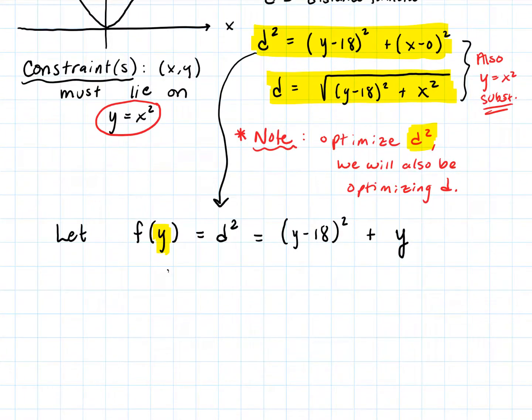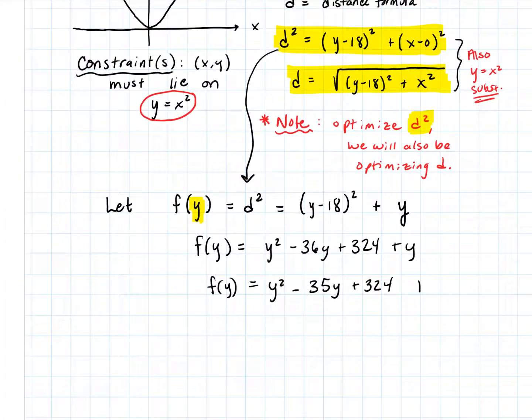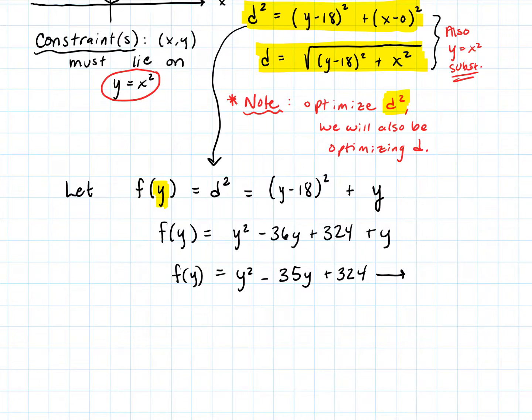We are very close to having everything we need right now. So F(y) is, I'm going to go ahead and expand this while we're simplifying, y squared minus 36y plus 324 plus y, which is y squared minus 35y plus 324. That's F(y). And the domain of this function is such that y is greater than or equal to zero. Remember y equals x squared, so y must be a positive quantity. That could be equal to zero, but greater than or equal to zero.